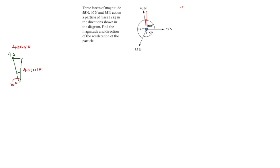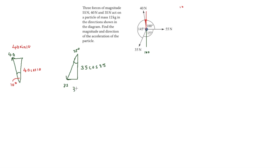Now we resolve the 35 newton force acting downward and across. The angle is 25 degrees — we know this because we have 90 degrees here and 180 degrees there, giving 180 minus 90 minus 65 equals 25 degrees. So the horizontal component is 35 sin 25 and the vertical component is 35 cos 25.